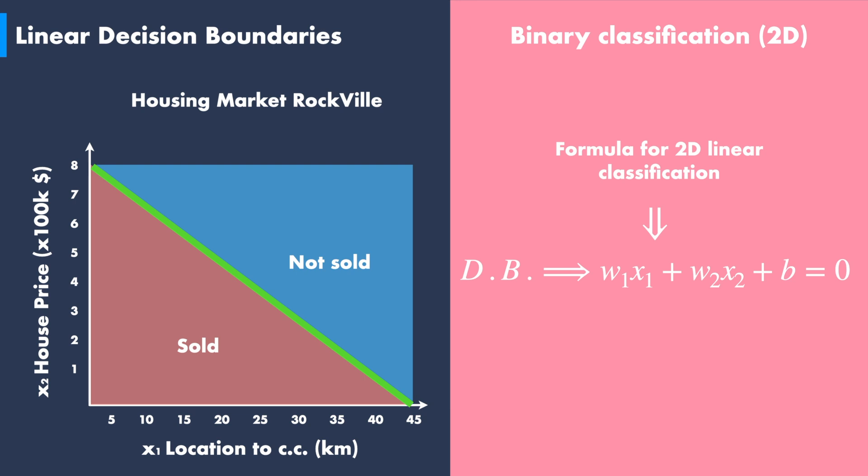The following equation w1x1 plus w2x2 plus b equals 0 represents the straight line for the decision boundary. This equation tells us that any data point below this line belongs to a house that is likely to be sold within a year.